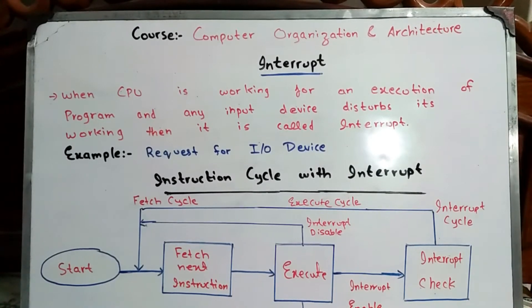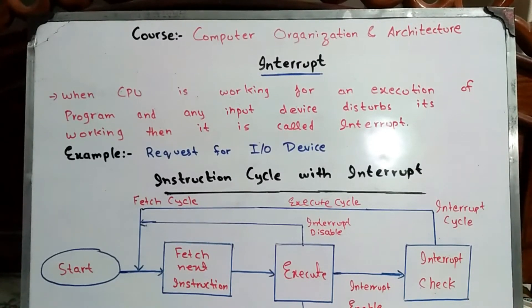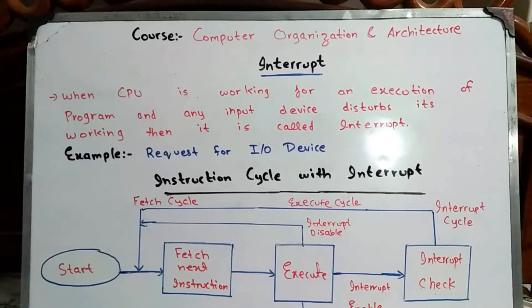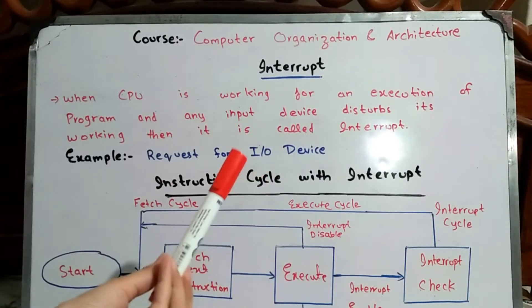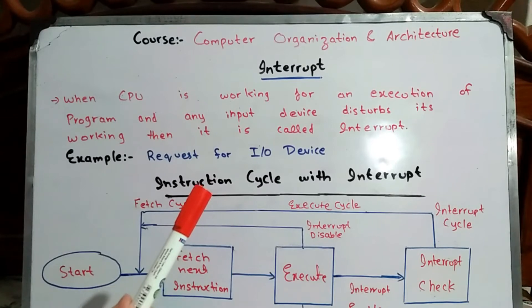The CPU can wait for the device to be assigned. When you do not give the instruction to your input device, the CPU will continue its execution. You will request the input device for input and the output device for output. If the program or instruction cannot immediately be assigned to your device, the CPU will wait and its working is disturbed — that is called an interrupt.